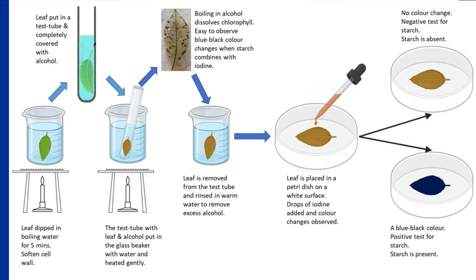But why should the leaf be boiled first before the starch test? Boiling water softens the leaves and helps to break down cell walls, making it easier for subsequent chemicals to penetrate the leaf tissues. Plant cells have tough cell walls containing cellulose, which can block the penetration of iodine solution into plant cells and hinder our ability to detect starch within the cells. Boiling softens and weakens these cell walls, allowing the iodine to reach the starch more easily.